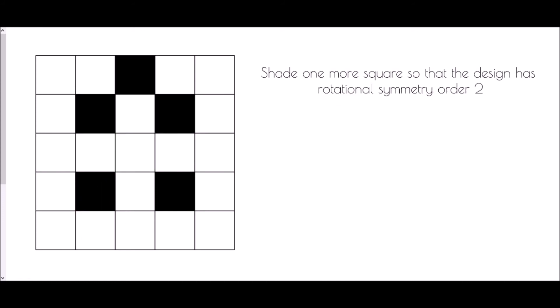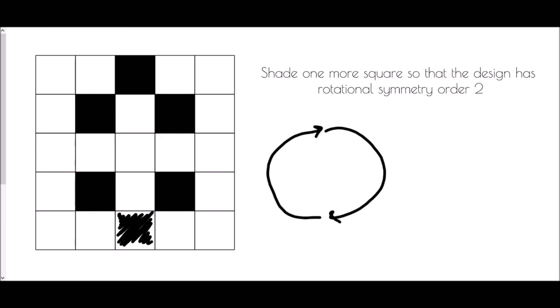In the second example, we're asked to shade one more square so the design has rotational symmetry of order two. That means we need to turn the shape 180 degrees and have it look the same, then turn another 180 degrees back to the start and have it look the same again. The shapes must be the same at the top and bottom. The only option is to shade in the square at the bottom, so that when the entire shape is turned around, we get the same shape at the top and bottom as we started with.